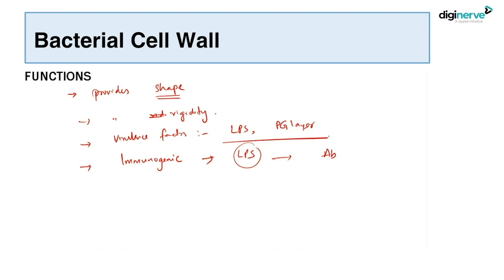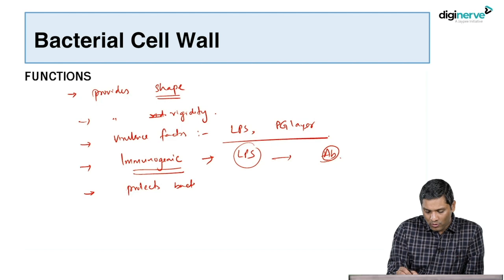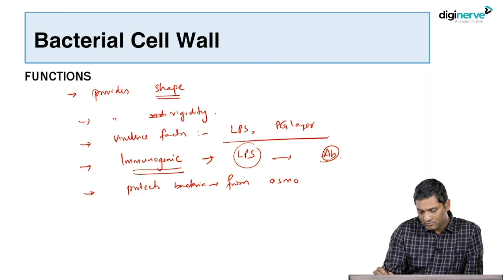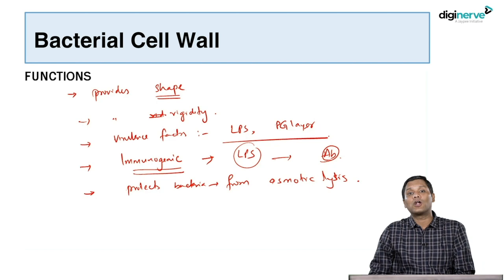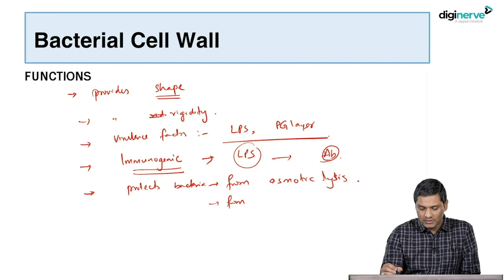Like the lipopolysaccharide antigen — against that, the human body can produce antibodies. So bacterial cell wall is immunogenic. The most important function of the bacterial cell wall is that it protects the bacteria from osmotic lysis. If you remove the cell wall, the bacteria may undergo osmotic lysis. The cell wall provides rigidity and also protects the bacteria from various external environments.